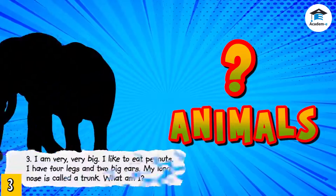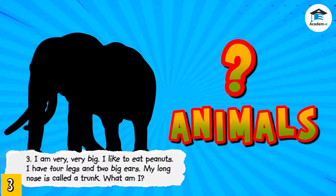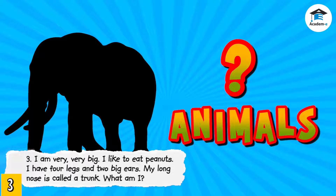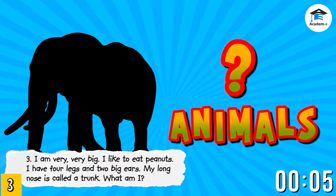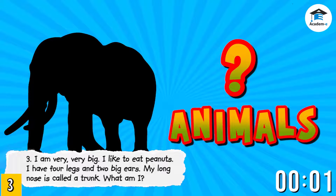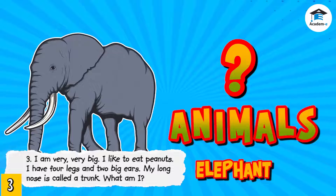Number three: I am very, very big, I like to eat peanuts, I have four legs and two big ears, my long nose is called a trunk. What am I? You've got it right — I am an elephant.